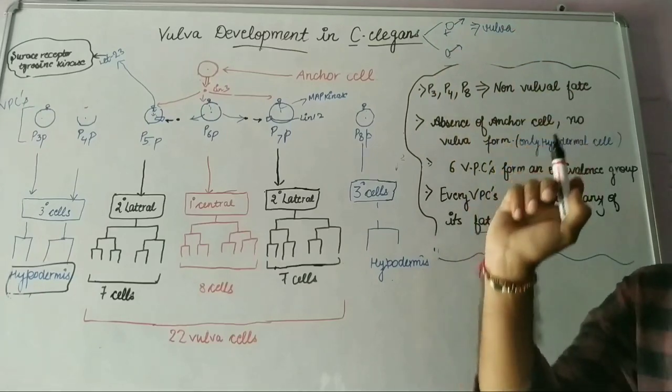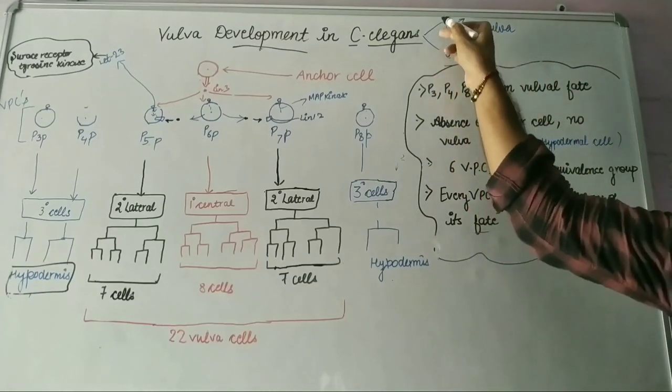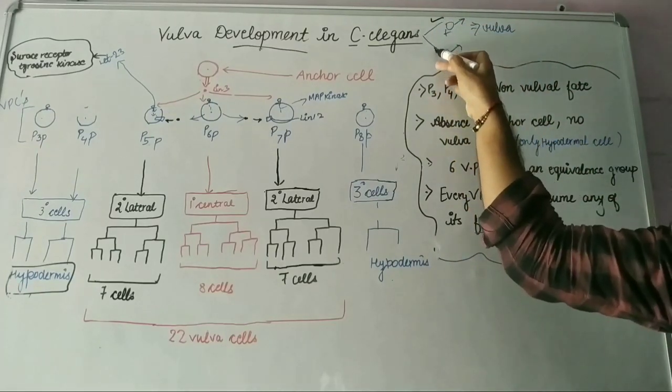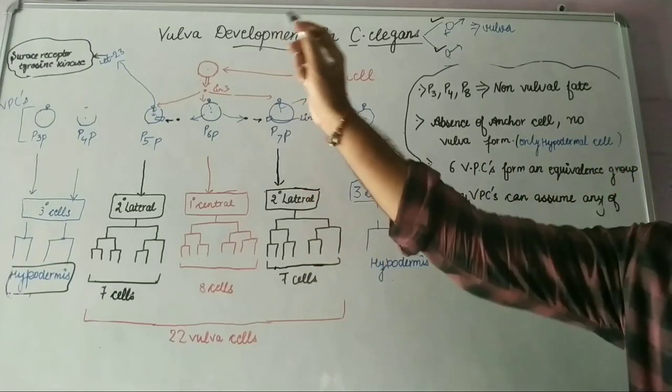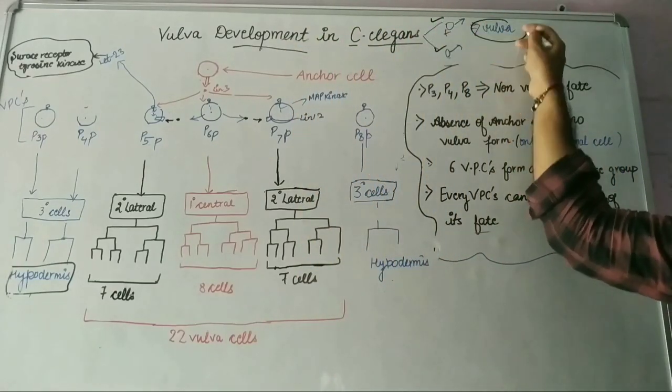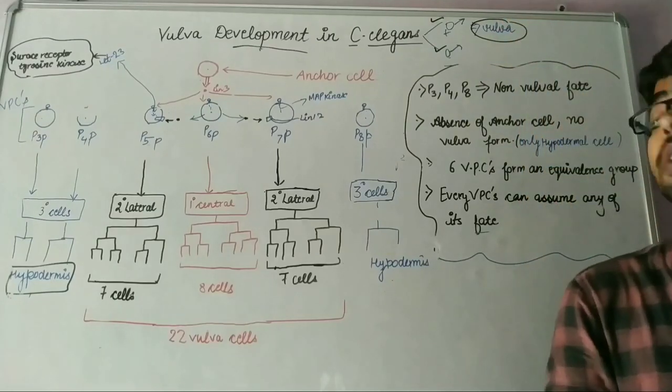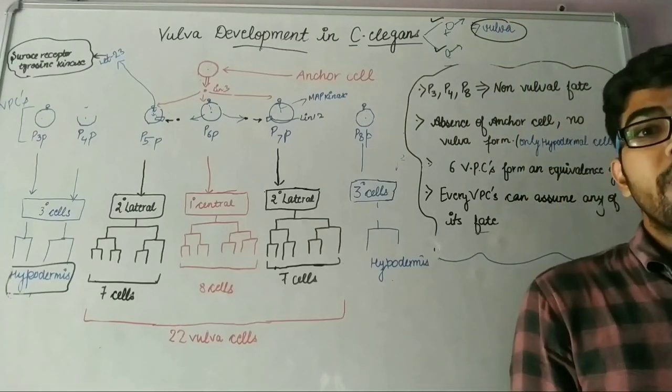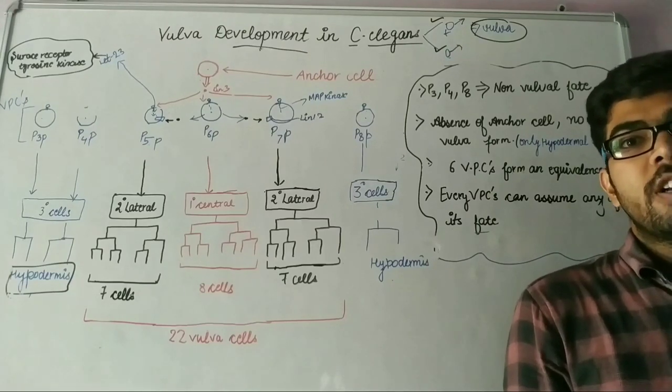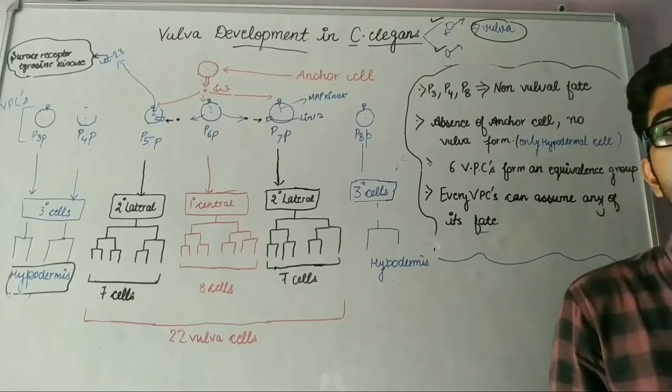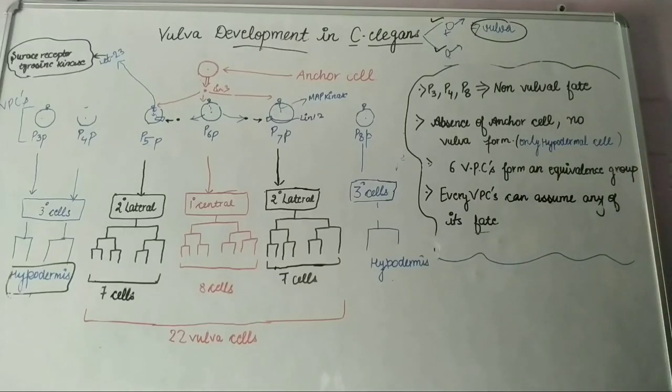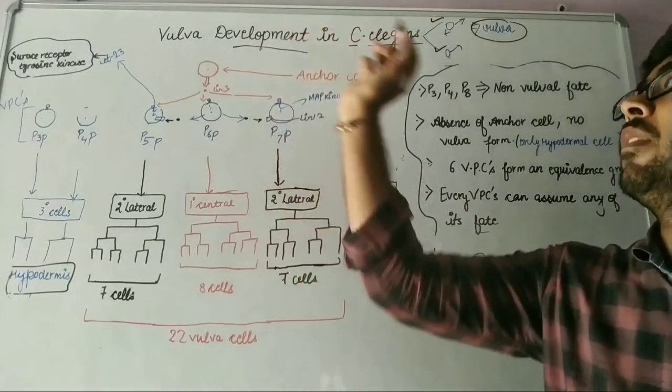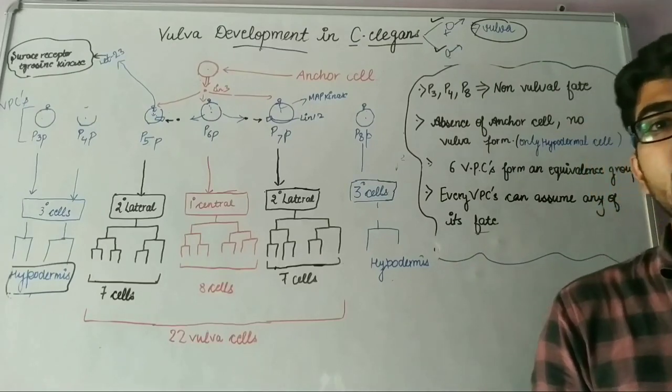There are two types of individuals: hermaphrodite and male are found in C. elegans. This vulva is found in hermaphrodite individuals. This vulva serves as a structure which provides entry for sperm and leaves fertilized eggs from the gonad. How does this vulva development occur in C. elegans?